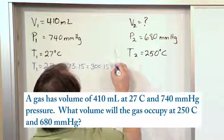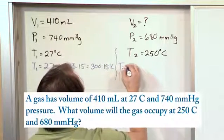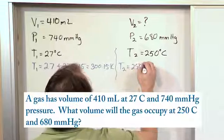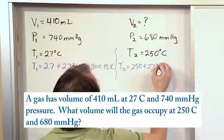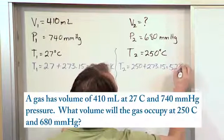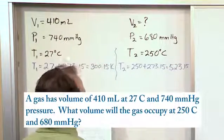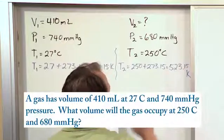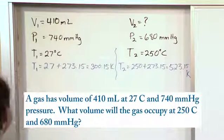And then over here, you'll have T2, you just take the 250 plus 273.15, and you'll get 523.15 Kelvin. Now, let's put a K down there for Kelvin. Okay, so now we know everything.